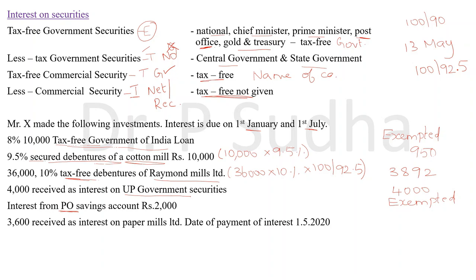Next: 3,600 received as interest on Paper Mills. Paper Mills is a company name and the word 'tax-free' is not given, so this is a less-taxed commercial security. The word 'received' is given, so we have to gross it up. The date of interest is 1st May — before 13th May — so the formula is 100/90. Calculate: 3,600 into 100/90 = 4,000 rupees in the amount column. If you find the total of the outer column, you will get the total income from other sources.